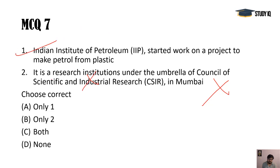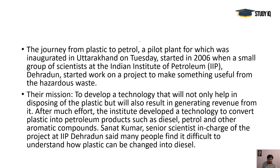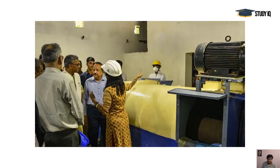The project was launched in Uttarakhand and a group of scientists has been working on making petroleum and diesel from plastic since 2006. Minister Harsh Vardhan was informed about this and an exhibition was shown to him. The correct answer is only statement one — the institution is in Dehradun under CSIR, not in Mumbai.